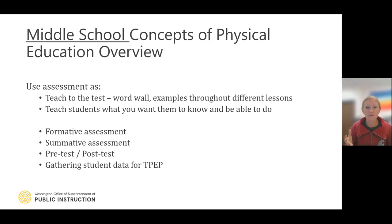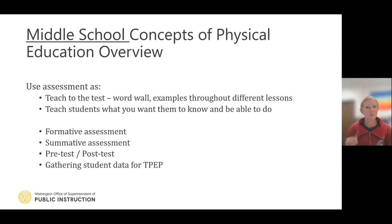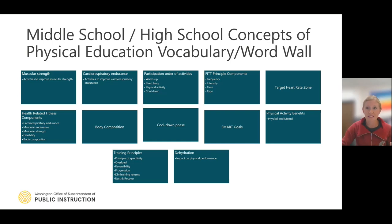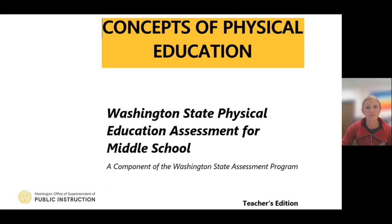Rather than 'teaching to the test' in a negative sense, knowing what students need to learn can help guide your planning. You can use word walls or examples throughout lessons. By the end of PE in middle school, students should know and be able to apply these concepts. It can serve as a formative assessment, help gauge incoming sixth graders using the elementary assessment, function as a summative assessment, or help gather student data for TPAP. We also created a sample word wall to support English language learners and multi-language learners, since vocabulary like 'cardiorespiratory endurance' is complex and worth breaking down.